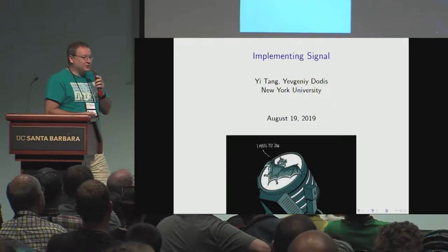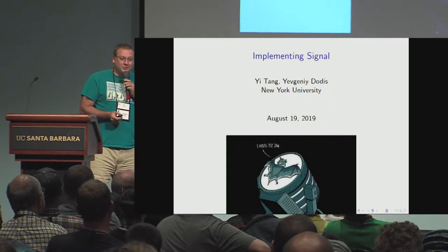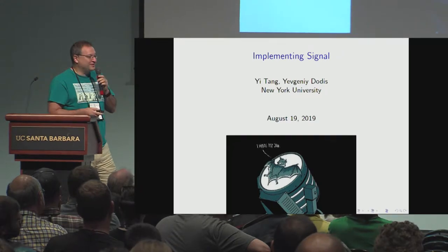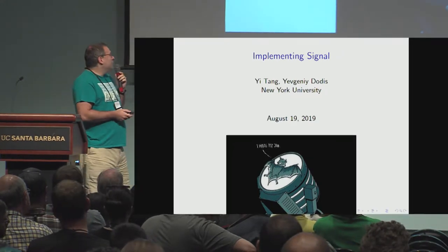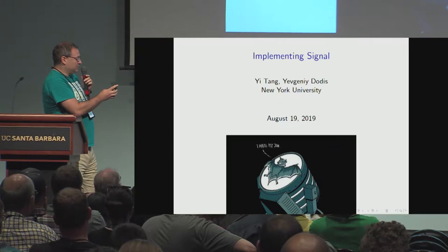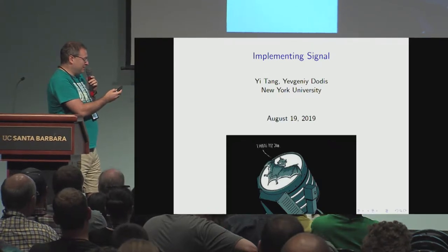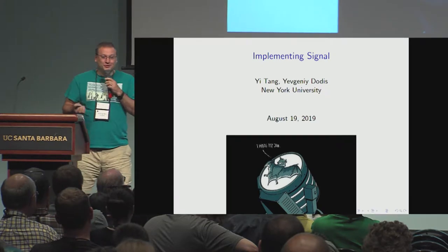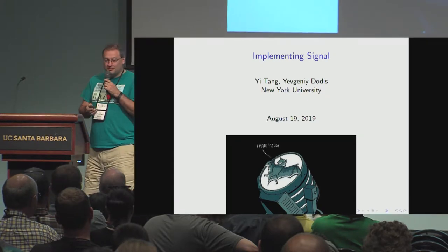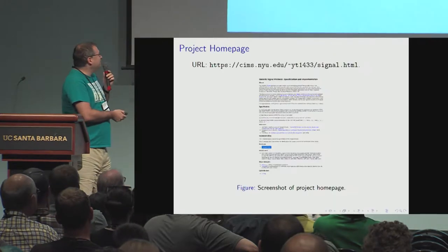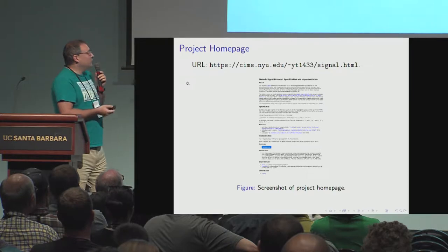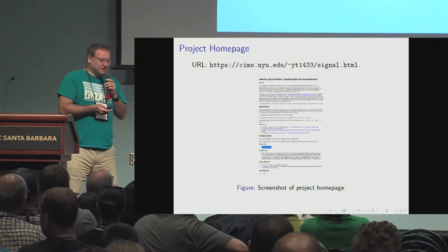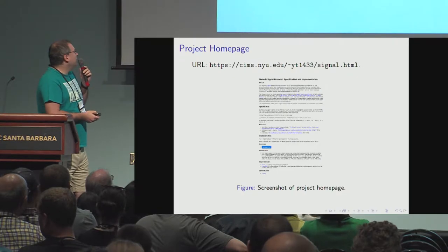I'll be talking about implementing Signal. This is joint work with Etank, who is a master student at NYU. This is my favorite Signal implementation, but I was told it's not good for a master project, so instead we did this. We decided to implement the Signal protocol for the reasons I'm going to talk about next.